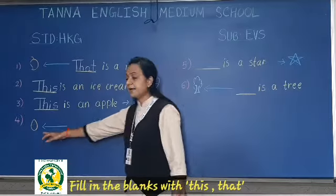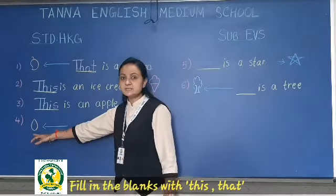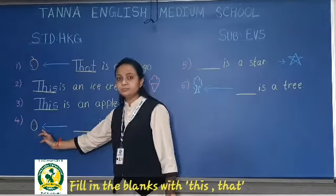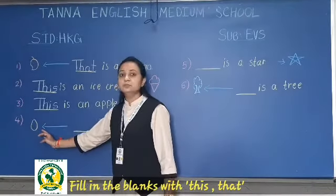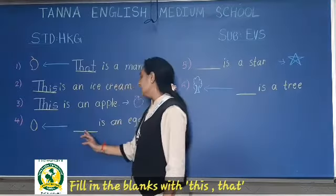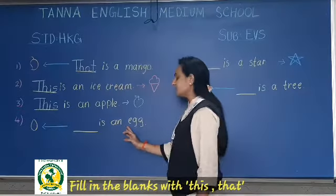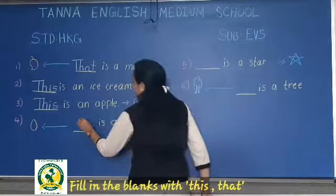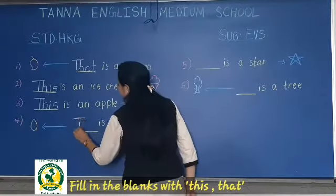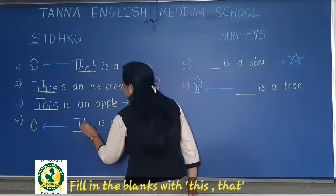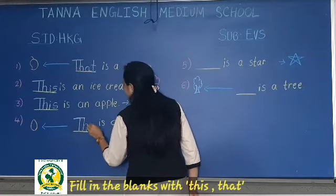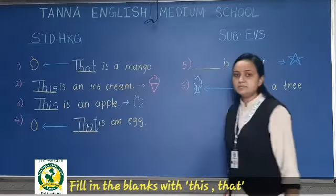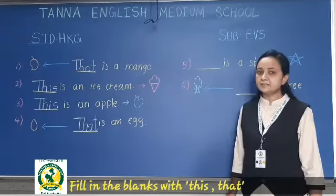Now, this is an egg. But the arrow is long, which means it is far. So, that is an egg. Write here T-H-A-T. That is an egg.